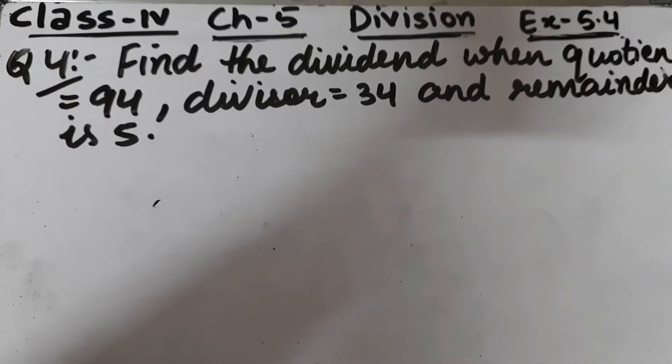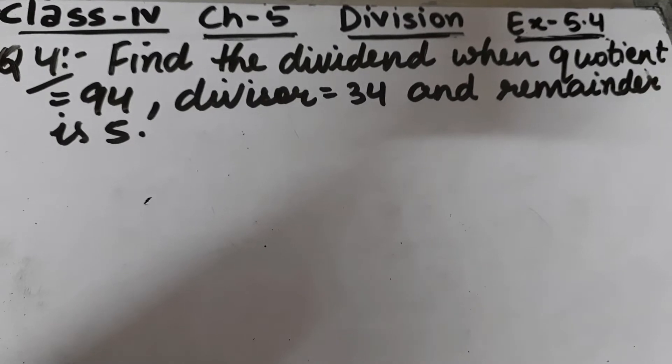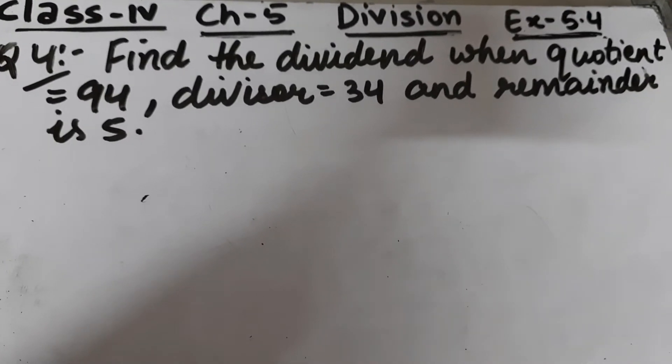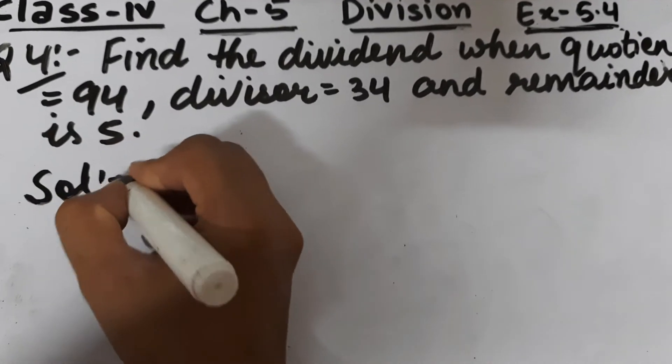Let's start question number 4 of exercise 5.4. The question is: find the dividend when quotient is 94, divisor is 34, and remainder is 5.